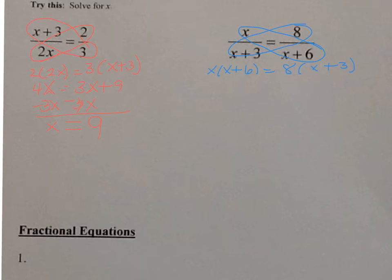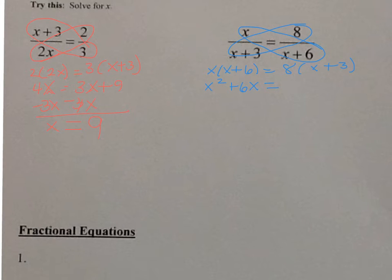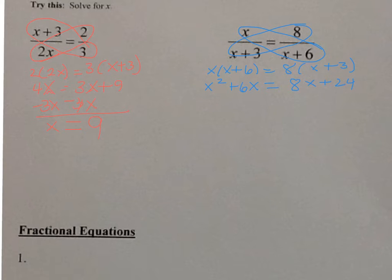Distribute the x and we get x squared plus 6x. Yes, you're right, that is a quadratic. And distribute the 8, we get 8x plus 24. So since I do have a quadratic - and I know it's a quadratic because I have that x squared - in order to solve a quadratic, it has to equal 0. We always want to keep our x squared positive.